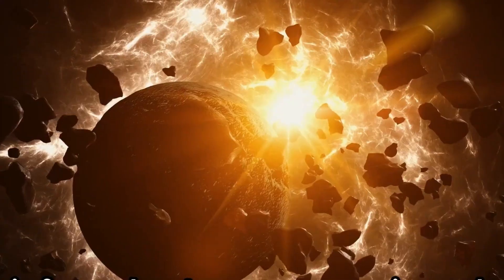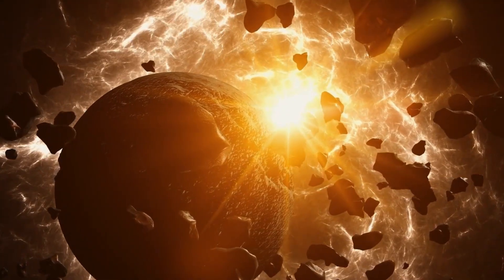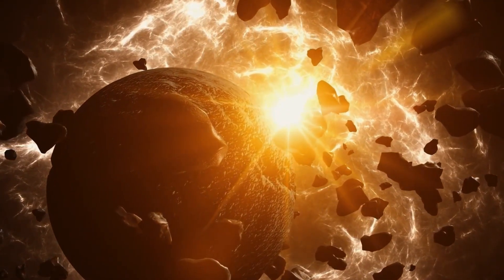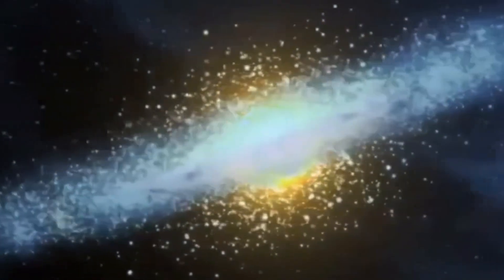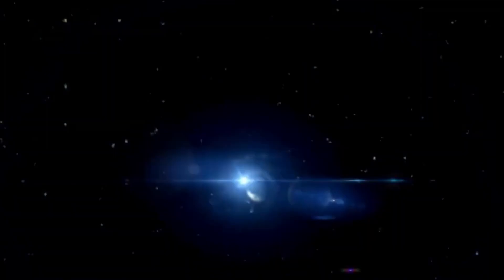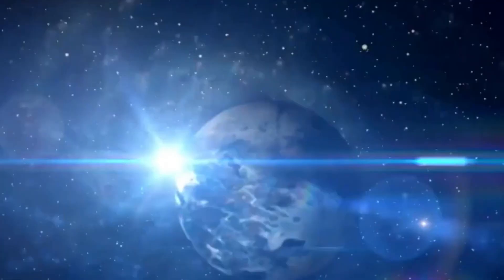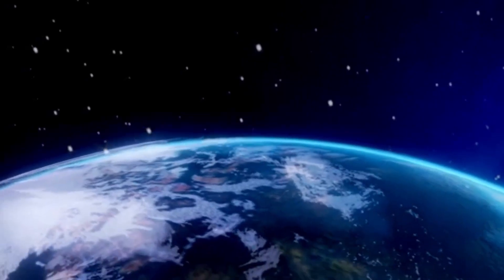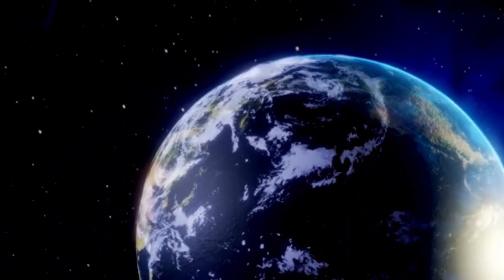While some models suggest that Proxima Centauri b could retain a significant portion of its water or even possess a denser atmosphere than Earth, the possibility of water loss cannot be ruled out. Another critical aspect is whether the planet can shield itself from its star's harmful rays. On Earth, we rely on the magnetic field and atmosphere to protect us from ultraviolet and other harmful radiations. However, for Proxima Centauri b, the strong radiation might present a significant challenge to maintaining a habitable atmosphere.